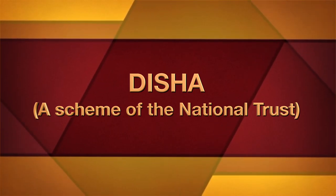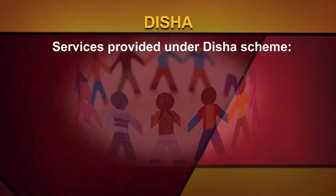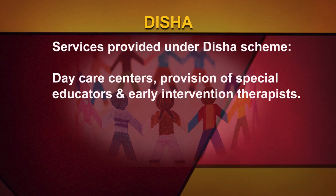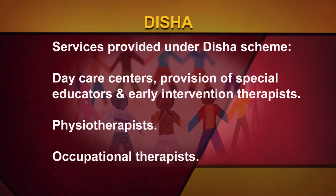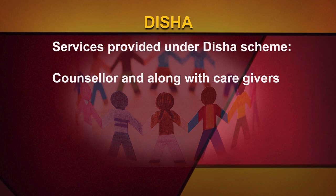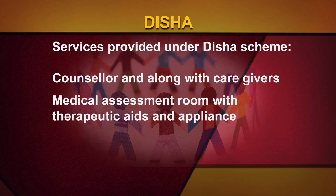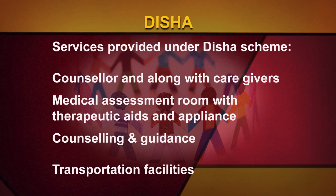Disha — A Scheme of the National Trust: it is an Early Intervention and School Readiness Scheme for children to provide training and counselling to children and parents. It is aimed at setting up Disha centres for early intervention for persons with disability in the age group of 1 to 10 years. Services provided under the Disha scheme are Day Care centres, provision of Special Educators and Early Intervention Therapists, Physiotherapists, Occupational Therapists, Counsellors along with Caregivers and Ayas, Medical Assessment Room with Therapeutic Aids and Appliances, and Counseling, Guidance, and Transportation Facilities.